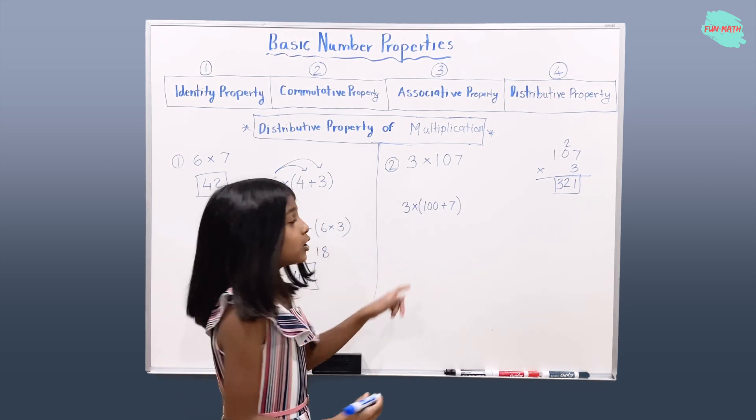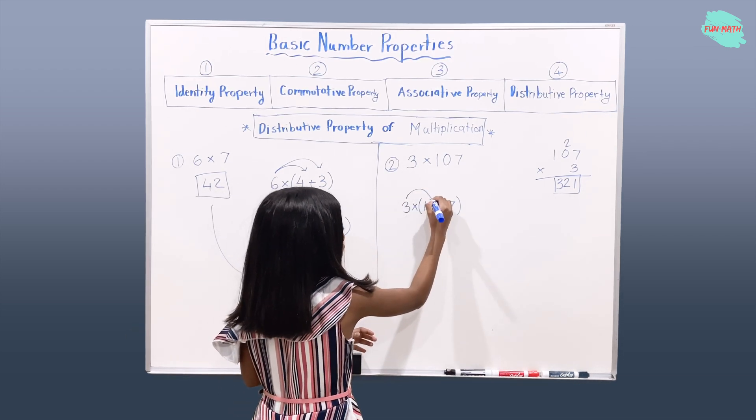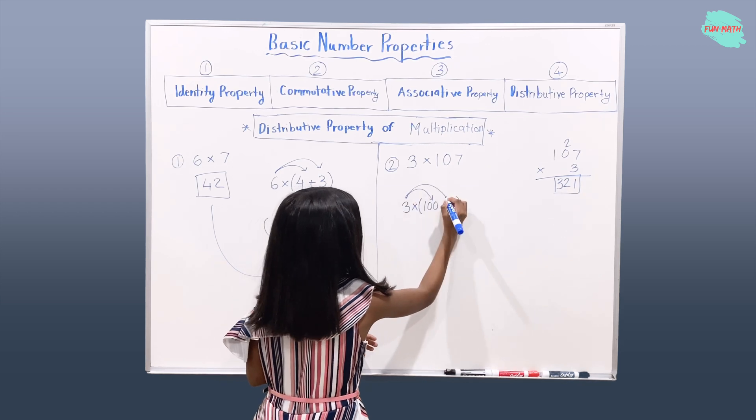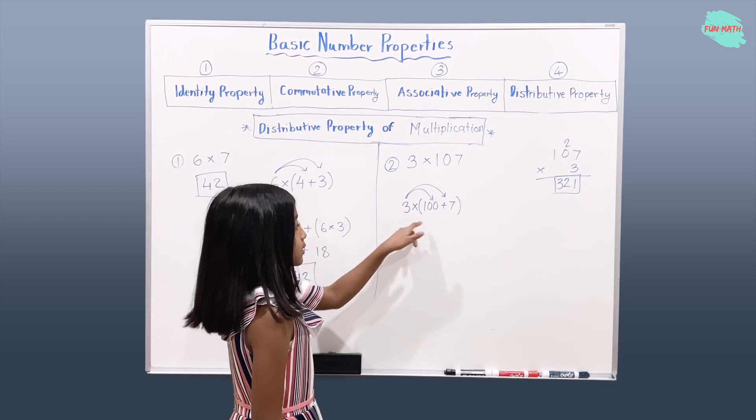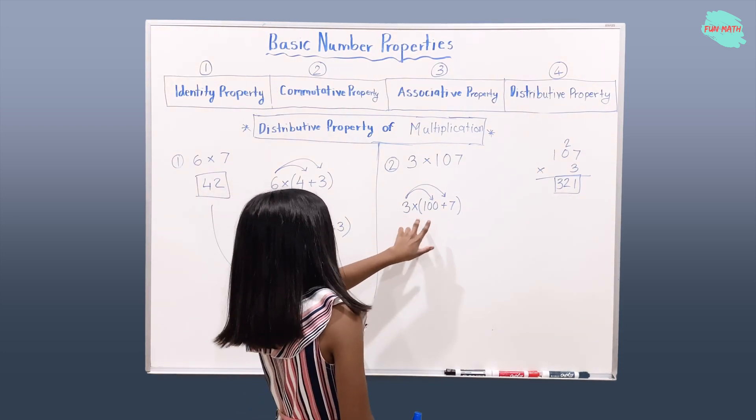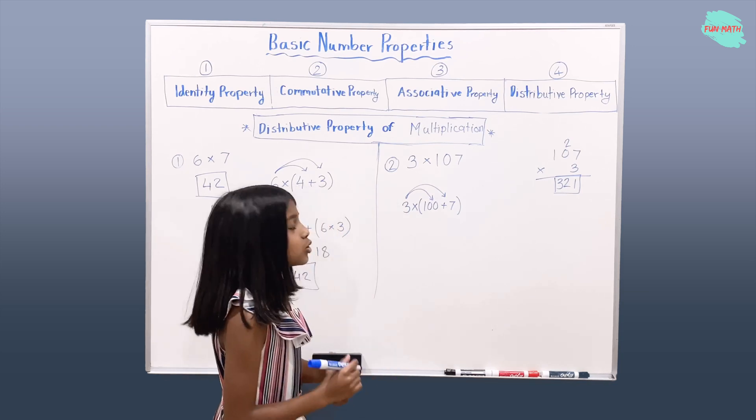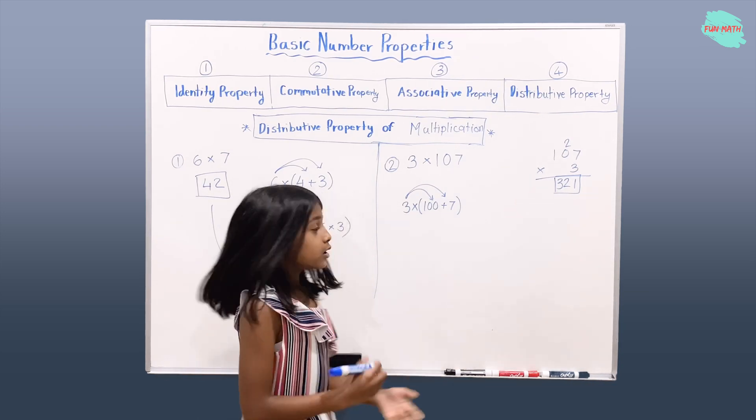So, you're going to do the same thing you did here. You're going to multiply 3 and 100, then 3 and 7. Let's do that. And then you're going to add those products and you should get 321. So, let's do that.